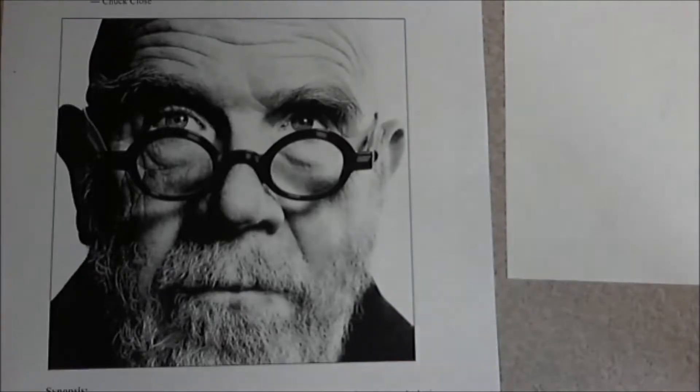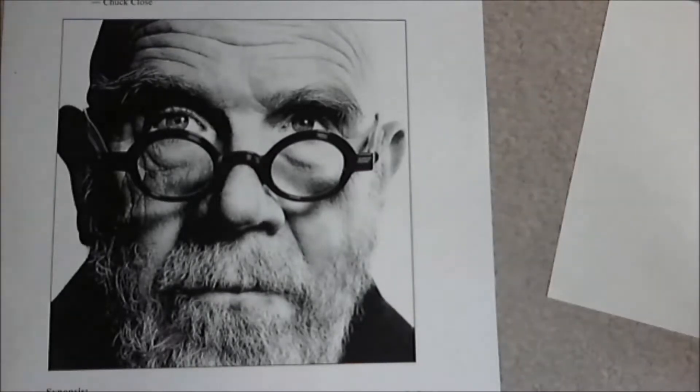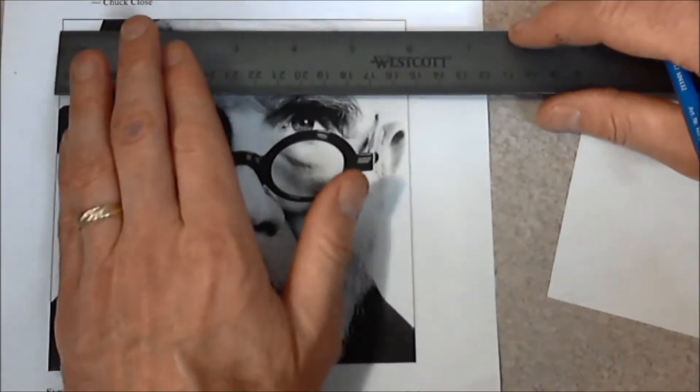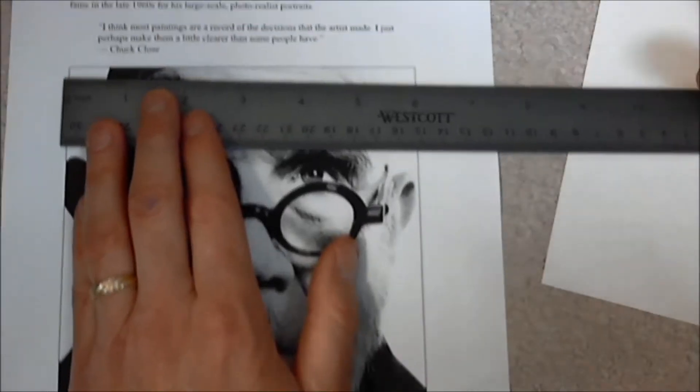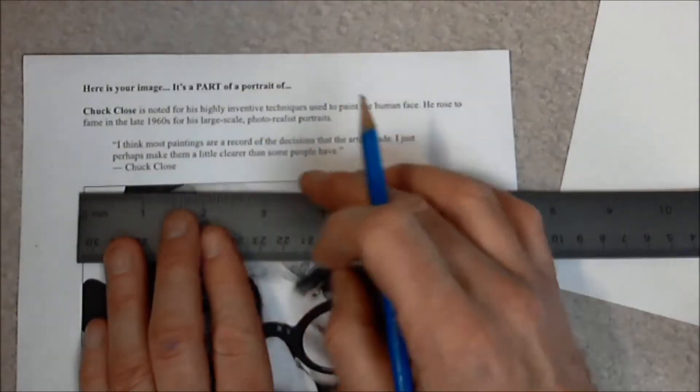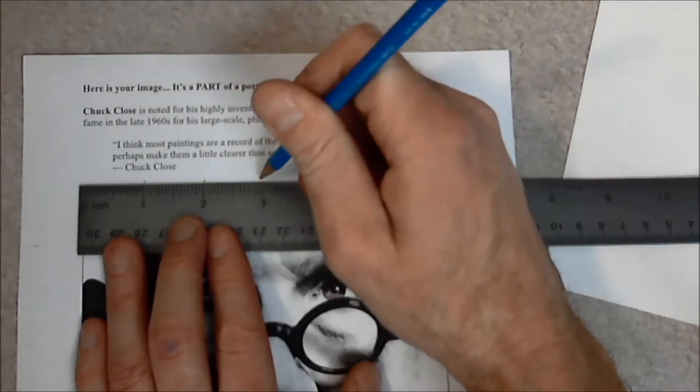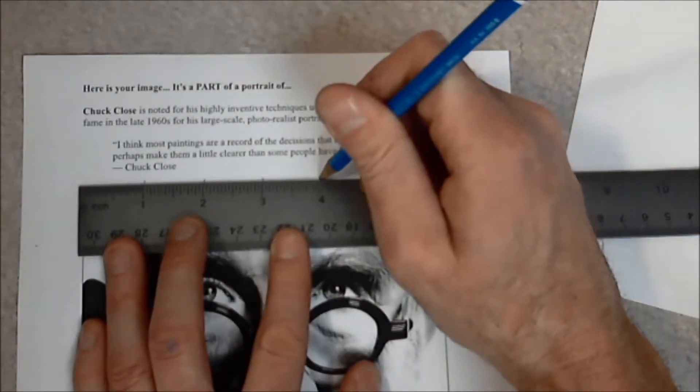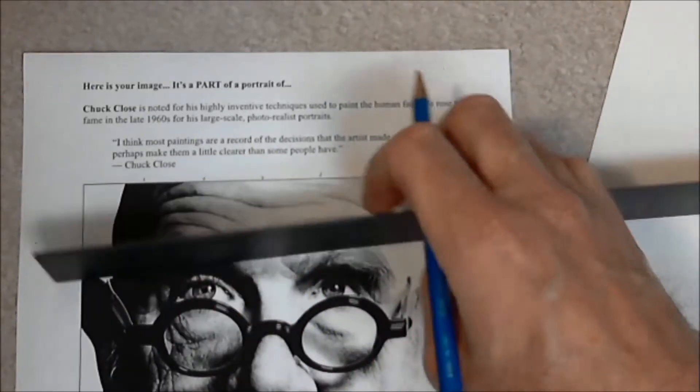Today what we're going to do is we're going to do a one-to-one ratio using grids. So to start with what I'll do is take a ruler and across the top I am going to mark off one-inch marks. I'm going to do one inch, two, three, four, five, and six.